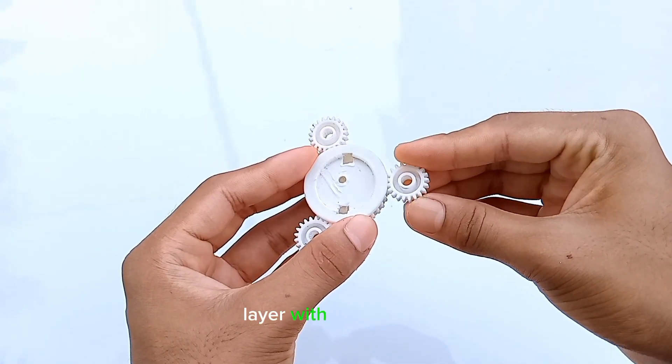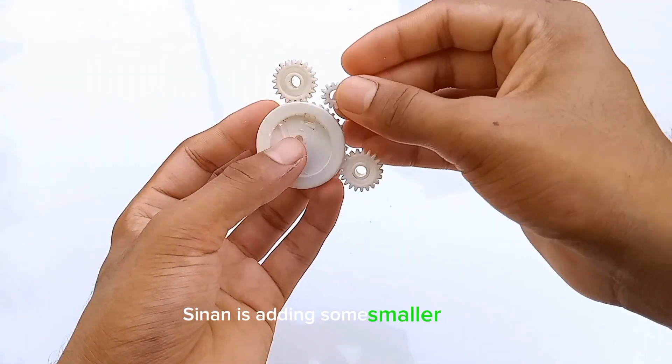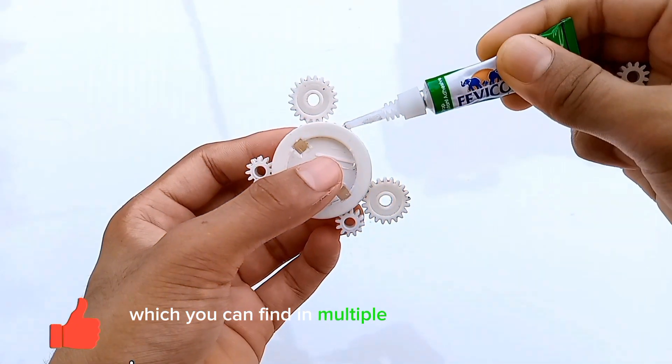Side of the Beyblade layer with super glue. For an even cooler look, Sinan is adding some smaller gears, which you can find in multiple Chozy LR launchers.